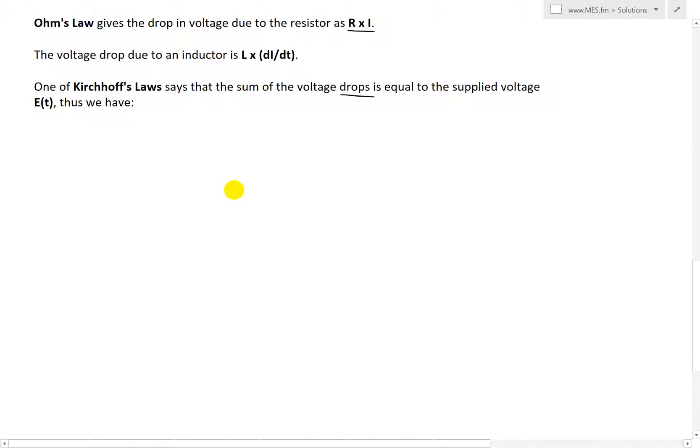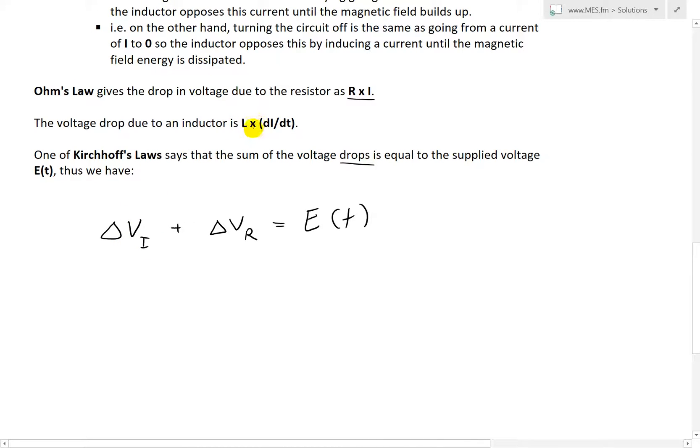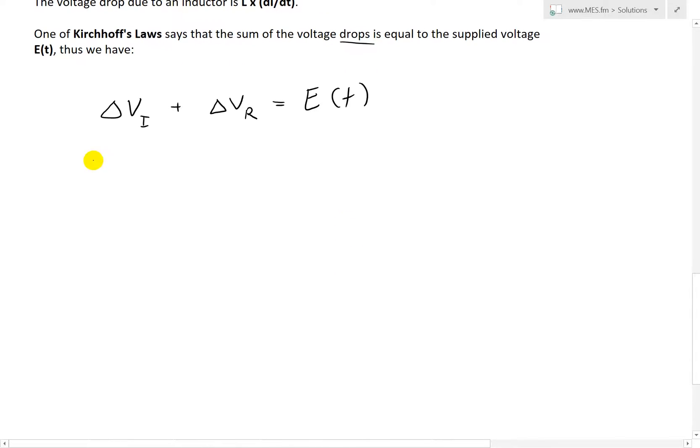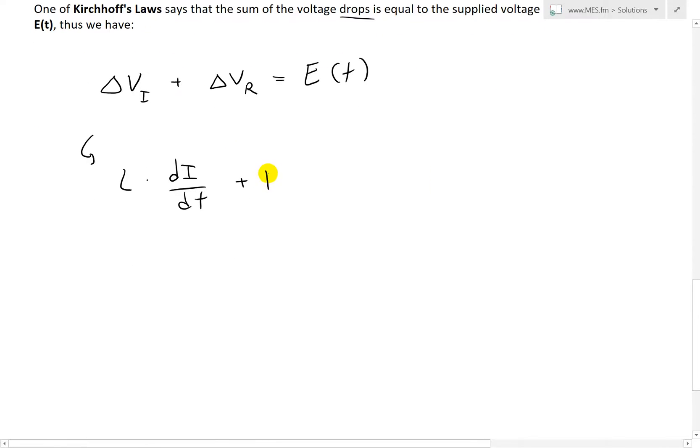So the sum of all the voltage drops in our circuit - the inductor and the resistor - delta V for the inductor and delta V for the resistor equals the energy supplied E(t). This drop for the inductor is L times dI/dt, and we add the voltage drop due to the resistor, which is, due to Ohm's law, R times I. So resistance times the current, and this has to equal the energy supply.